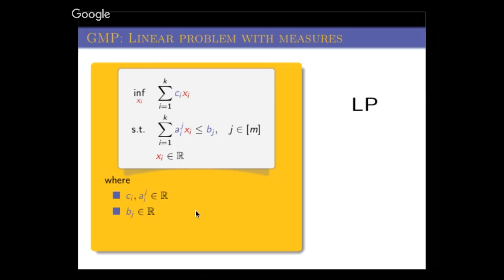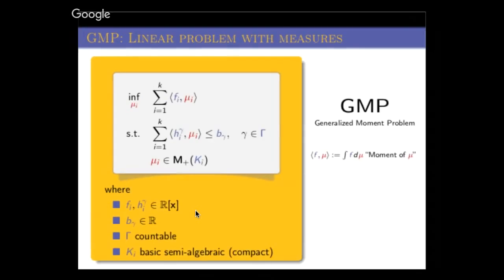The problem I want to look at is called GMP, the Generalized Moment Problem. The major change to LP is that now your variables are measures—finite, positive, real measures—which are supported on some basic semi-algebraic sets. Basic semi-algebraic sets are sets that are defined by polynomial inequalities. So you have measure variables.